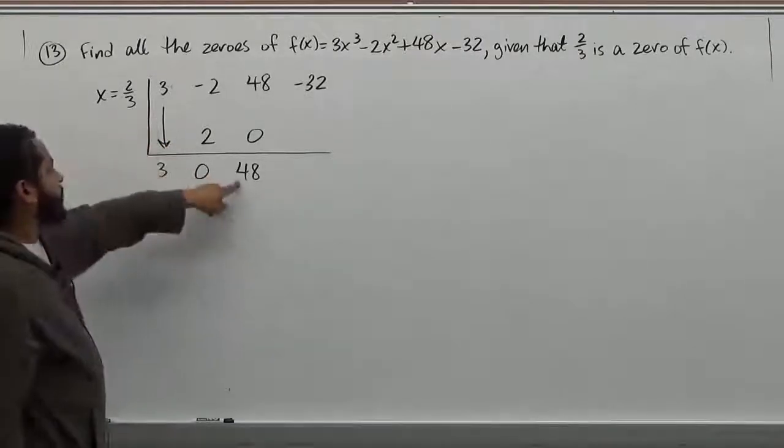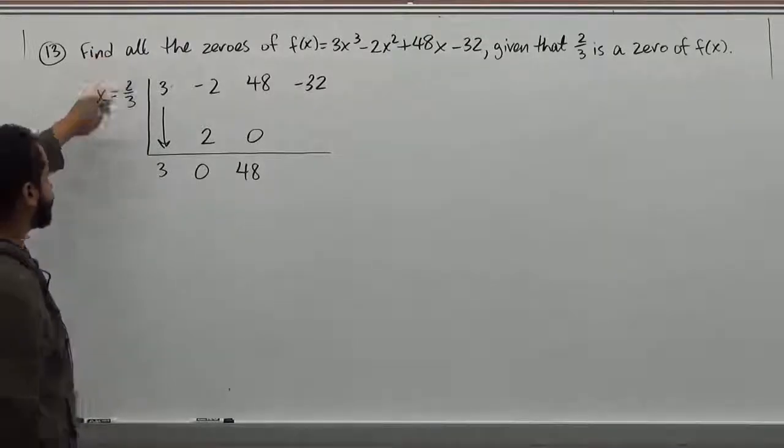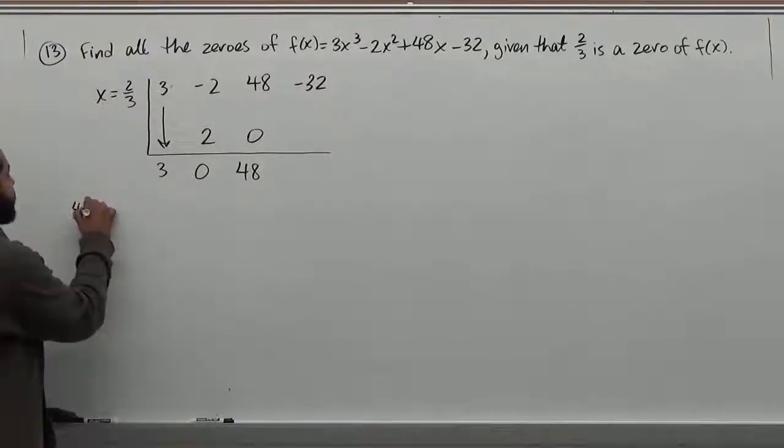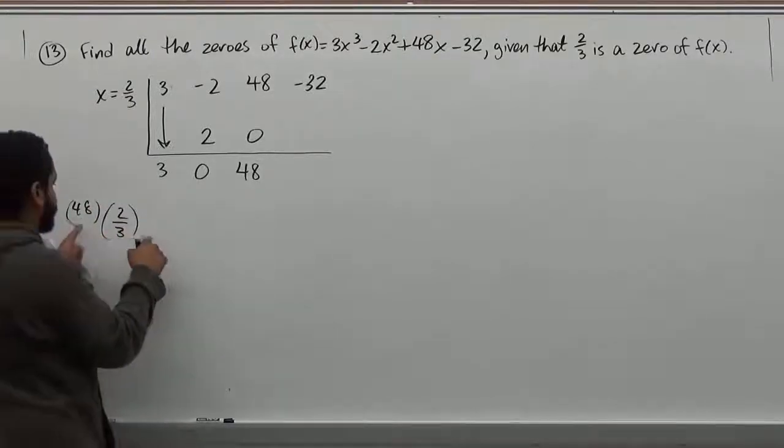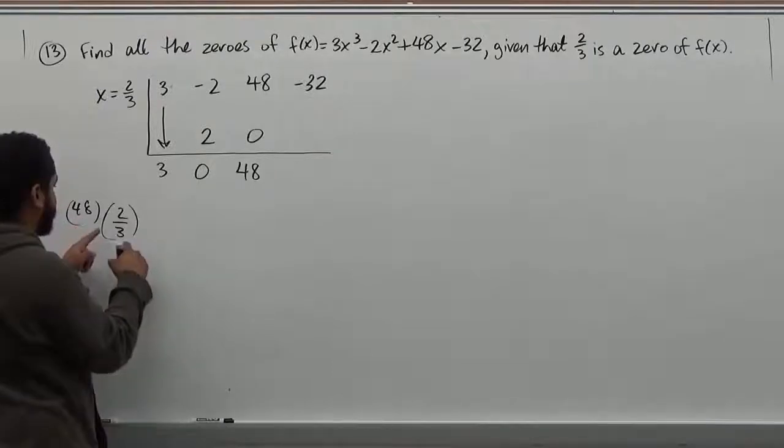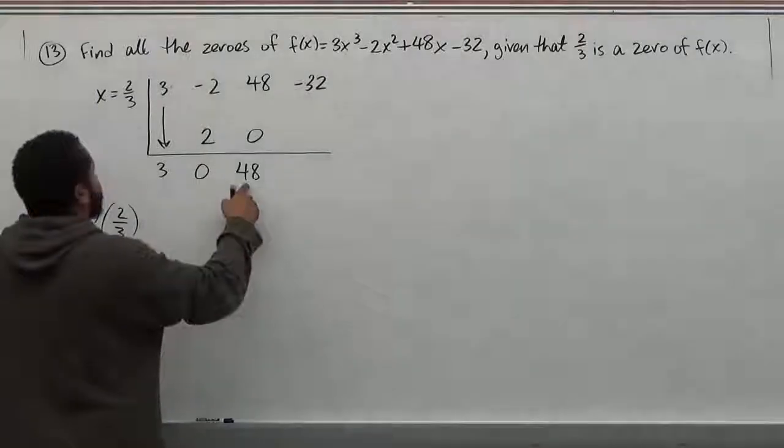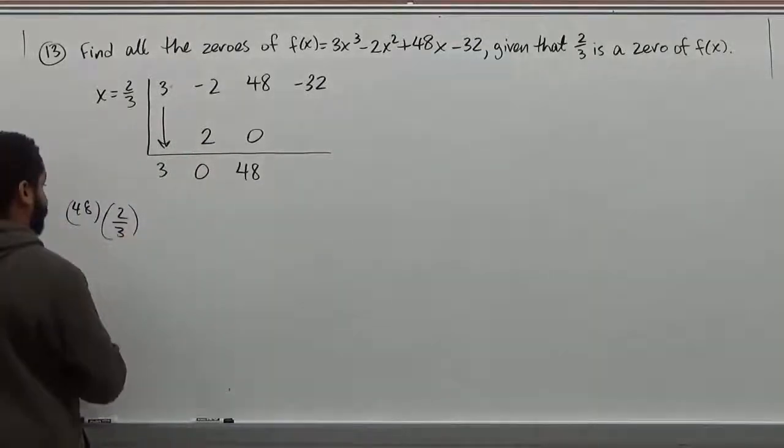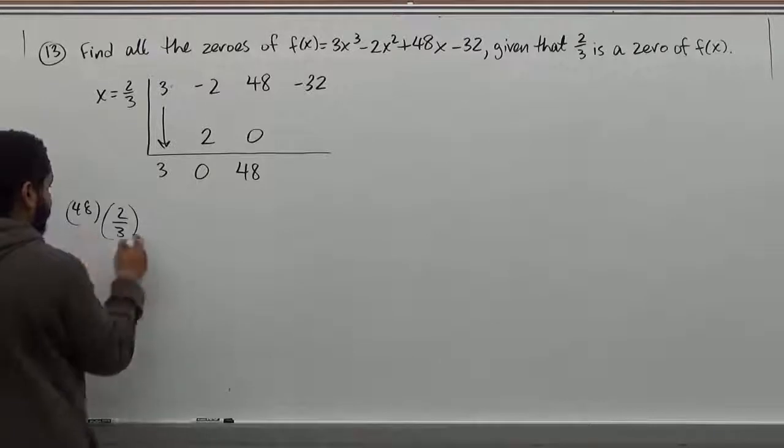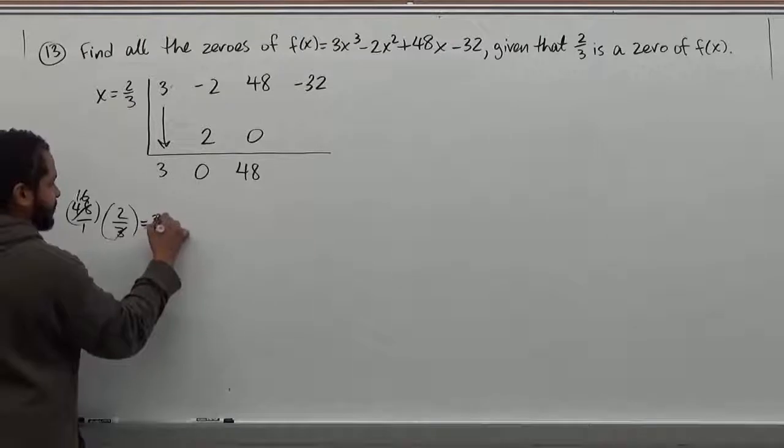And we add them and we get 48 here. The next step is to multiply 2/3 times 48. And 48 divided by 3, that's going to be 16 and 16 times 2. So 48 times 2/3 gives us 32 when these reduce and we get 16. This is perfect for this, right? Because this is also 32 and it's positive and they add up to 0.